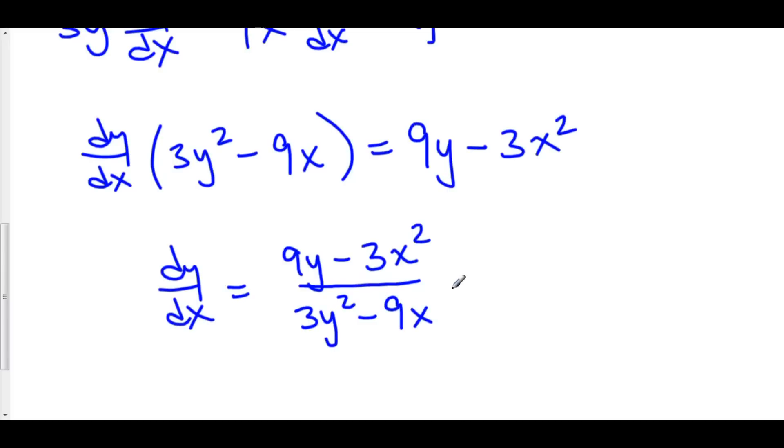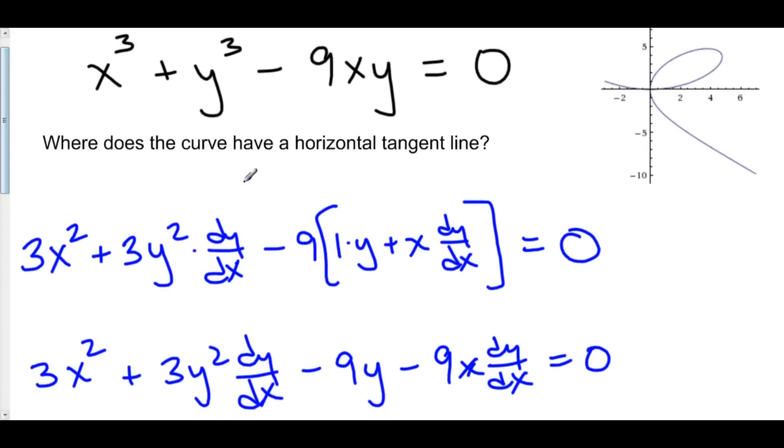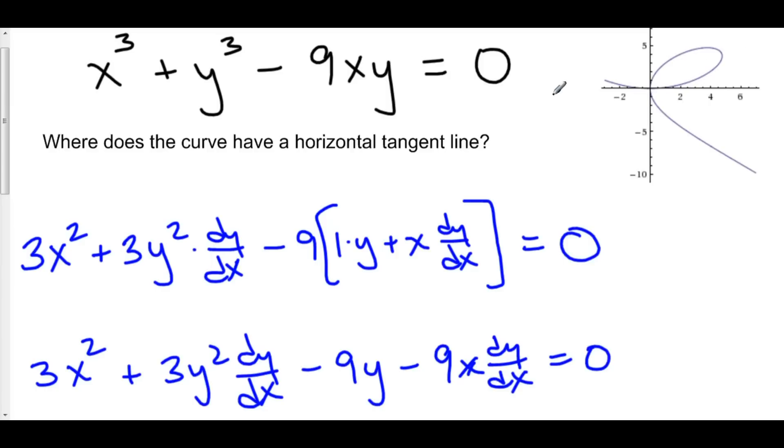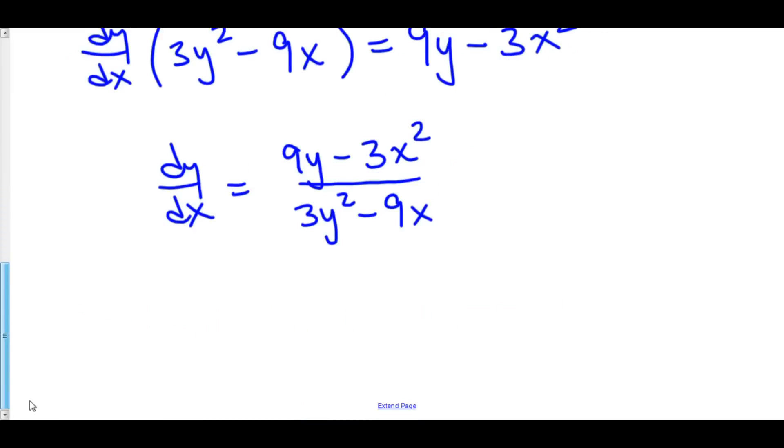Okay, here's our derivative. Now, the question in the very beginning was, where does this curve have horizontal tangent lines? We know there's approximately two of them, but we don't know exactly where they are. So we're going to set this equal to 0. The only thing that makes a fraction equal to 0 is if its numerator is equal to 0. So we're going to set 9y minus 3x squared equal to 0.